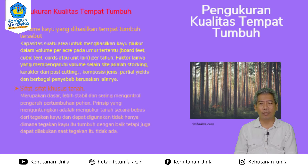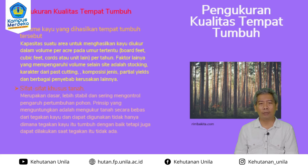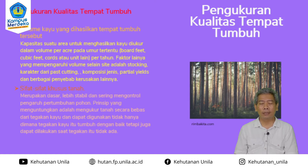Faktor lain yang mempengaruhi volume selain tapak atau tempat tumbuh adalah stokingnya, yaitu volume yang sudah ada di situ. Kalau sudah banyak, maka pertambahan volumenya akan lambat. Ini juga dipengaruhi oleh karakter dari past cutting atau tebangan sebelumnya — apakah tebang habis atau tebang pilih. Kemudian juga komposisi jenis, karena ada persaingan cahaya, unsur hara, dan air yang akan mempengaruhi volumenya. Serta partial yield atau hasil bagian, dan berbagai penyebab kerusakan seperti hama, penyakit, dan kebakaran hutan.